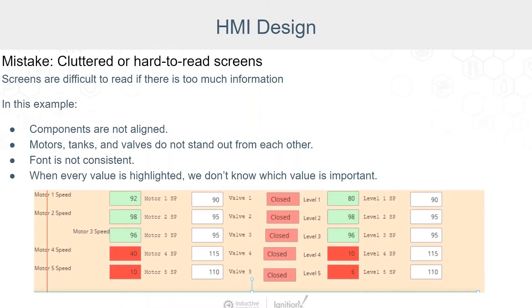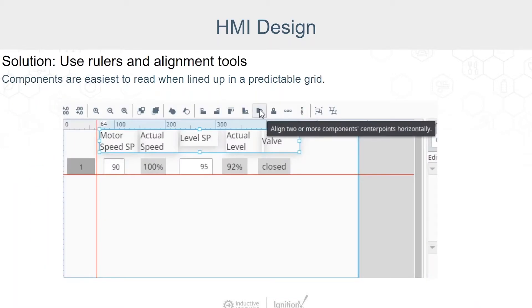Let's have a look at a cluttered and hard-to-read screen. Screens are difficult to read if there's too much information, so you should consider grouping your data into tabs or grids. In this example, the components are not aligned, the motors and tanks and valves do not stand out from each other, the font is not consistent, and we don't know which highlighted component is important because almost everything is highlighted. One trick that goes a long way is to use grids and rulers — making sure things are lined up correctly and appropriately sized will greatly improve legibility.